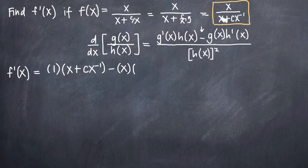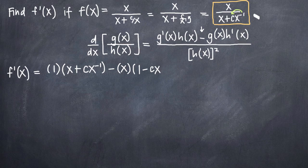Let's take that term by term. The derivative of x is just 1. Now we use power rule to find the derivative of cx to the negative 1. Power rule tells us to bring our exponent out in front and multiply it by the coefficient: negative 1 times c gives us negative c, so we get minus c. The base x stays, and we subtract 1 from the exponent: negative 1 minus 1 is negative 2. So the derivative of the denominator is 1 minus cx to the negative 2.